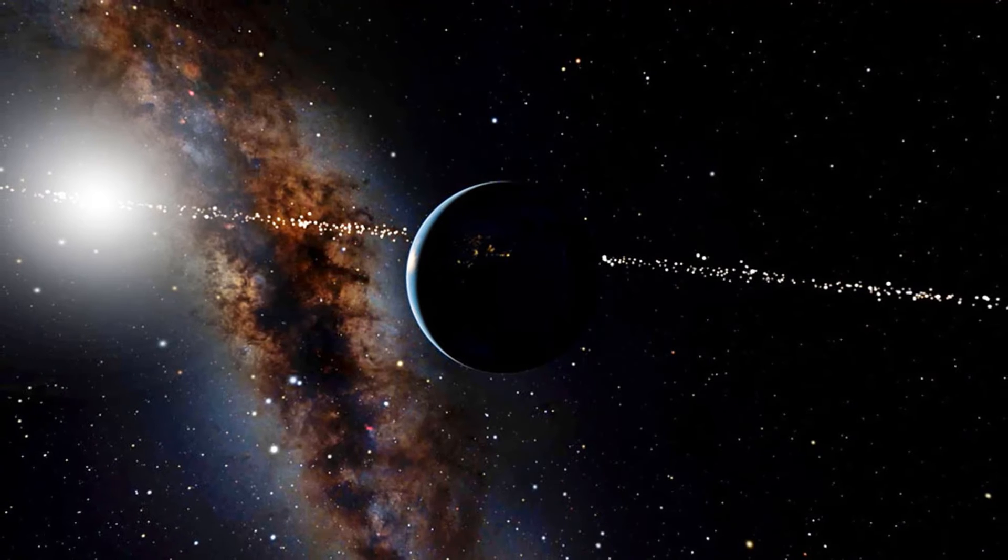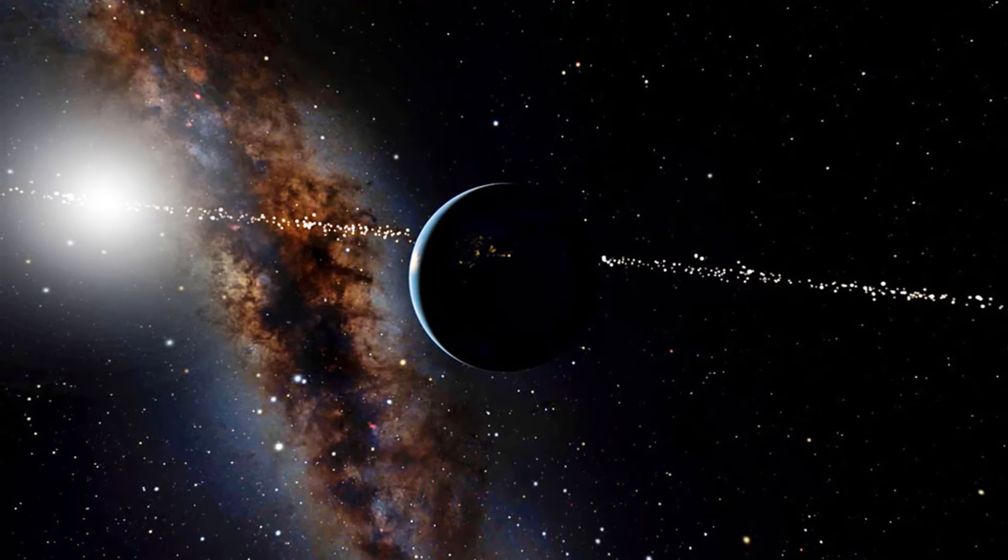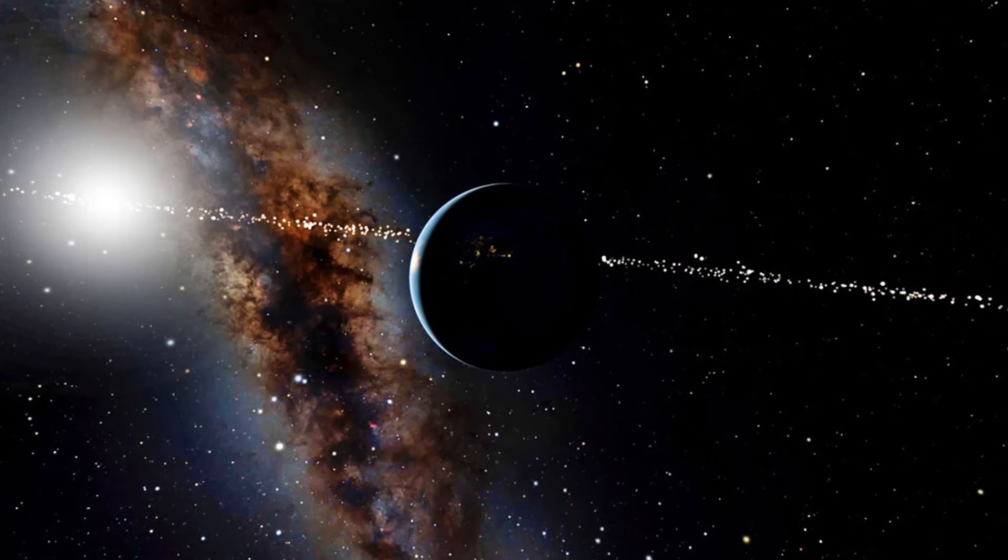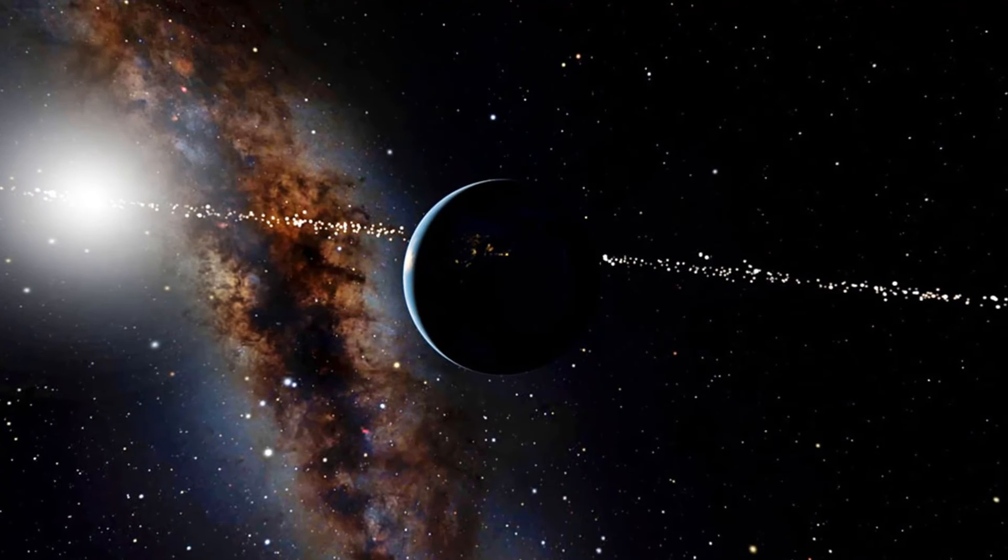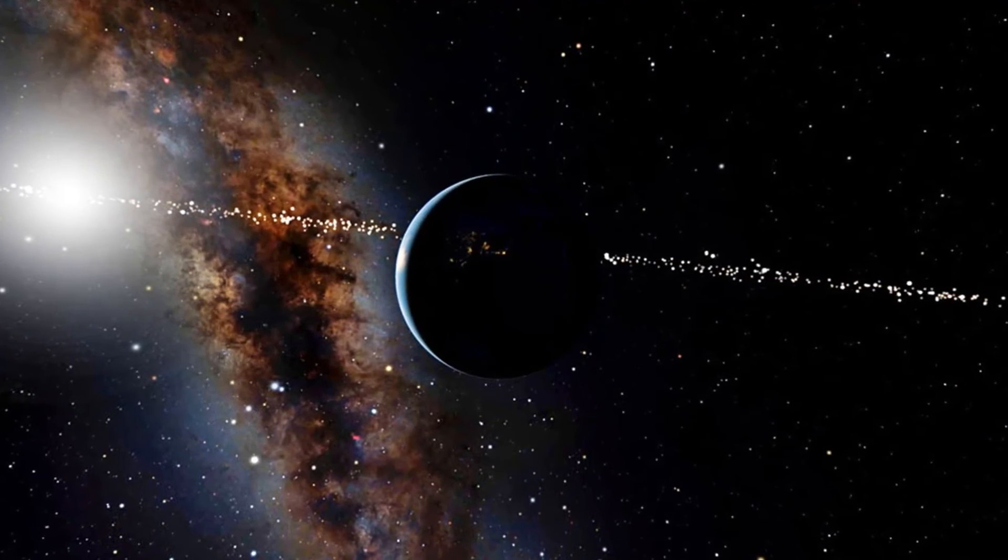The researchers identified the Earth transit zone—the region of space from which stars can see Earth cross the Sun—and ran the clock backward and forward to see stars move in and out of that zone.